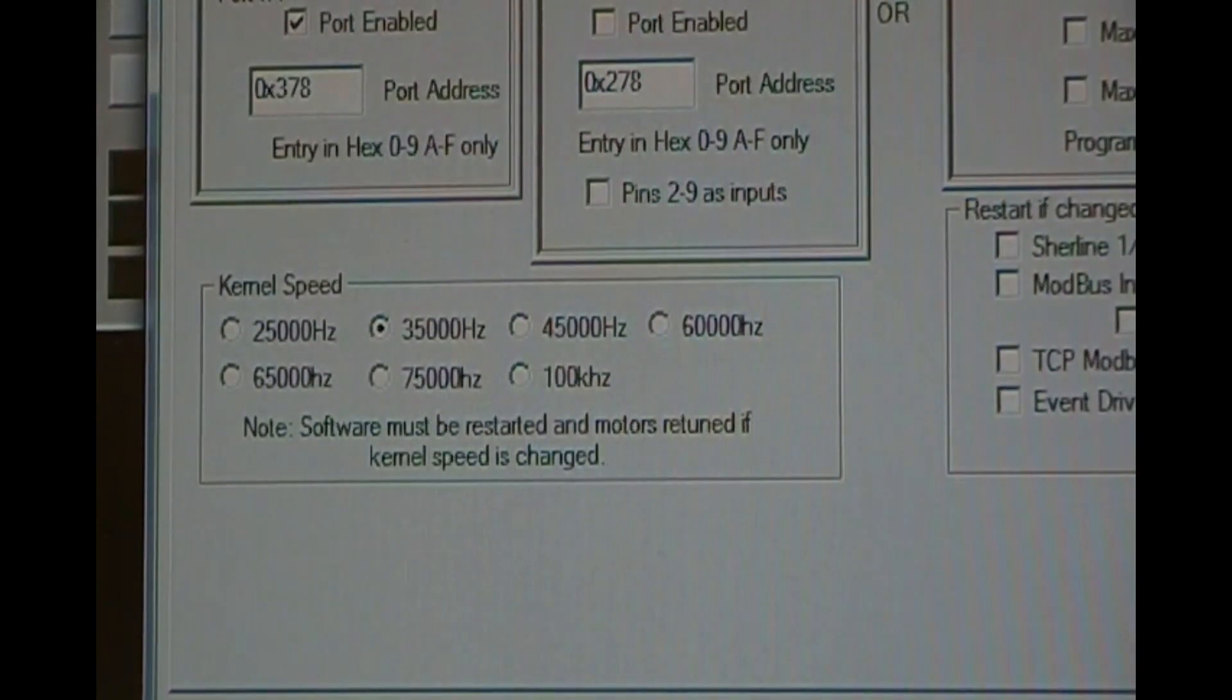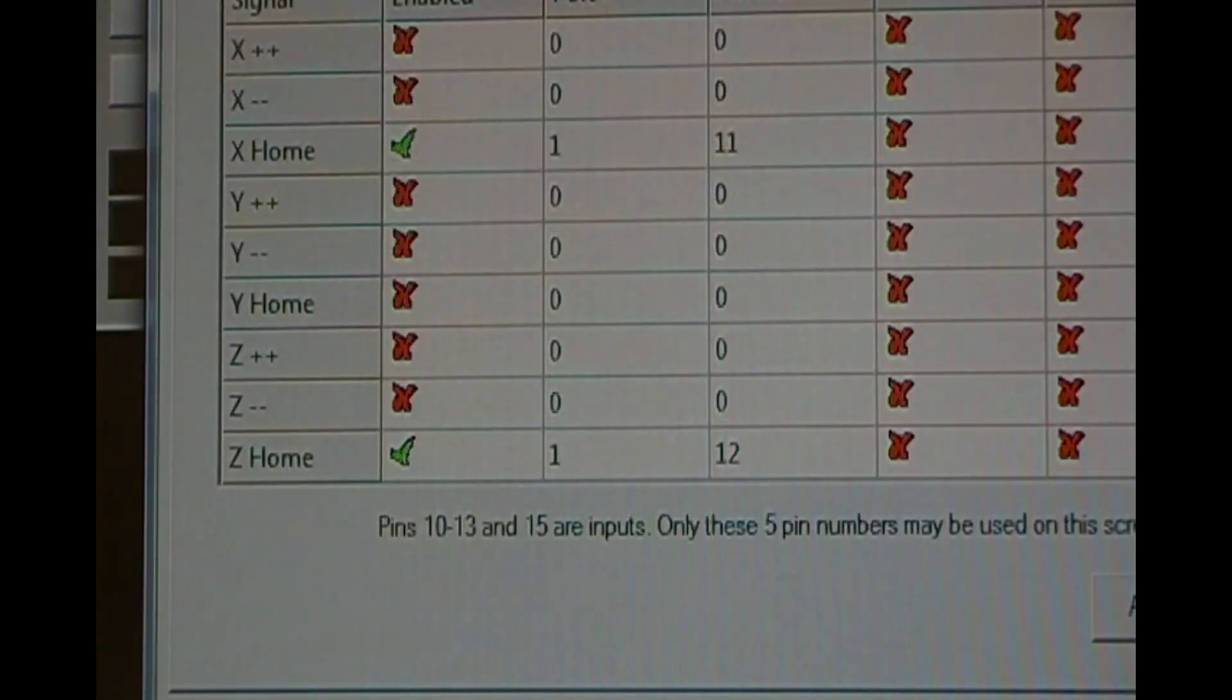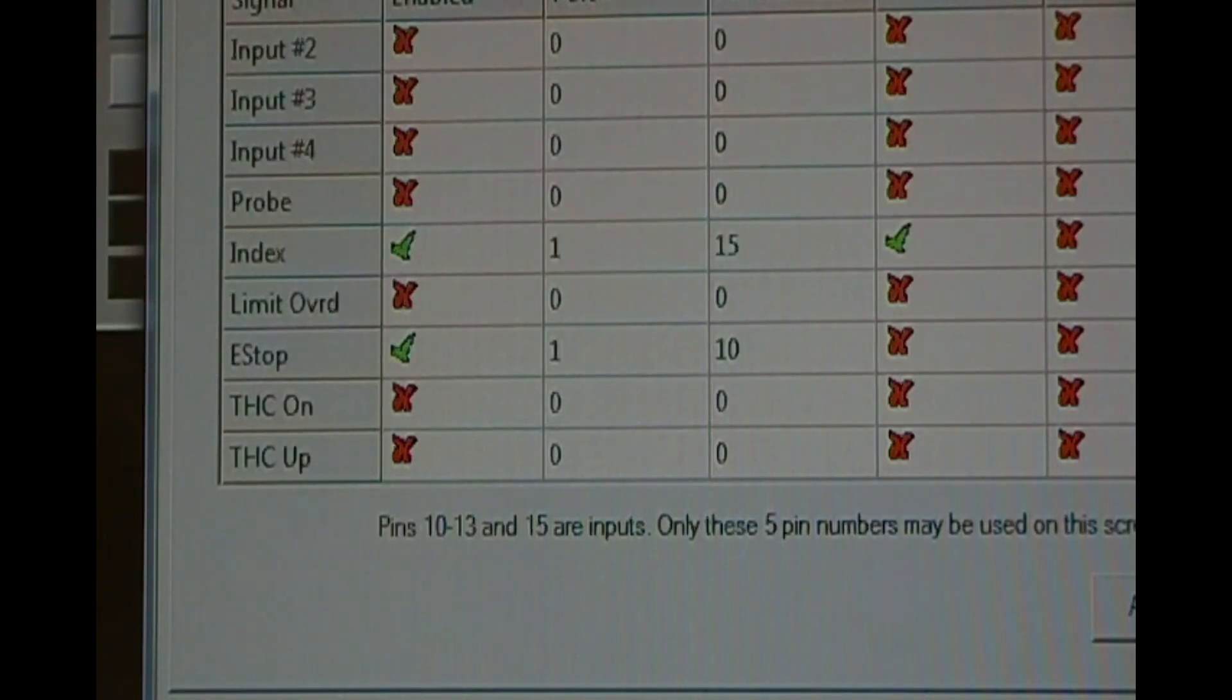Configuring a reed sensor is easy using Mach 3. Click on Configure, select Ports and Pins, the Input Signals tab, then scroll down until you find Index. The settings are Enabled, Check, Port 1, Pin 15, Active Low, Check, Not Emulated and No Hotkey.